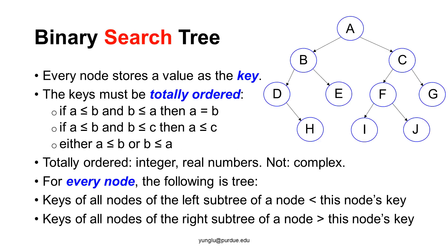Binary trees can be used to solve many types of problems. One type involves ordering data, and this type of binary tree is called a binary search tree. For these problems, each node in a binary tree stores a piece of data called a key. The keys must be totally ordered. Consider three values A, B, and C in a set.